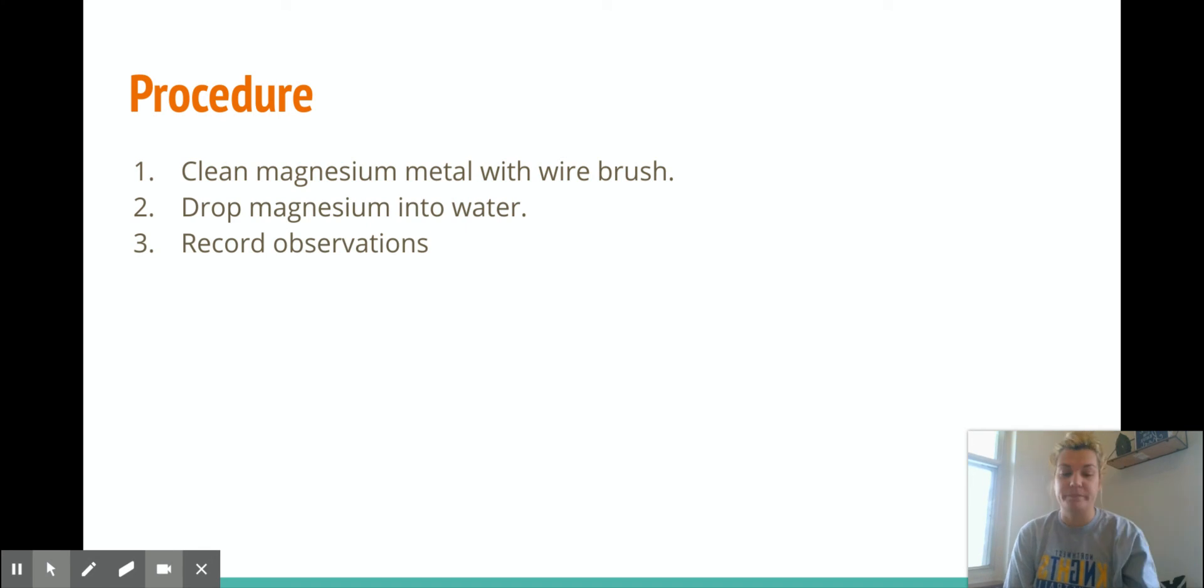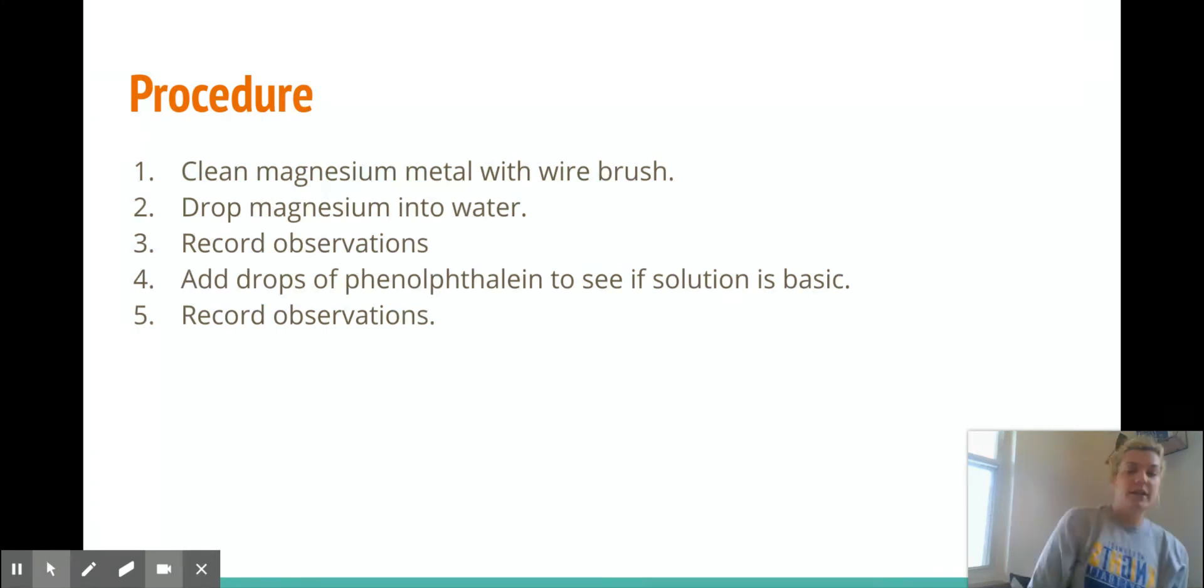And then we're going to drop the magnesium into the water and record observations. So we're going to record initial observations here. And then we're going to add a few drops of this thing called phenolphthalein, and he explains it a little bit in the video. But what happens is phenolphthalein is clear when it's under acidic conditions, meaning pH less than 7, and it turns pink under basic conditions, so pH greater than 7. What I do want you to realize is that phenolphthalein indicates to us that a chemical reaction has changed. If it stays clear, that means no chemical reaction has changed. If it does turn pink, then that tells us a chemical reaction has taken place because we're creating a new substance to make it pink. And then we're going to record observations.